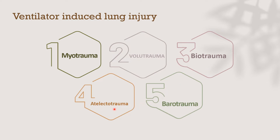The fourth expression is atelectrauma, which refers to the fact that lung units do not have equally the same elastance. So when applying volume to the lung, we will find some lung tissues are overinflated and others are not inflated — atelectrauma. The last one is barotrauma, which refers to increased pressure over the lung causing pneumothorax, rupture of the alveoli, pneumomediastinum — all associated with ventilator-induced lung injury.